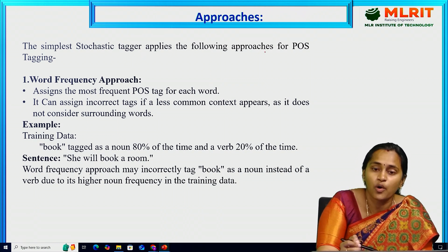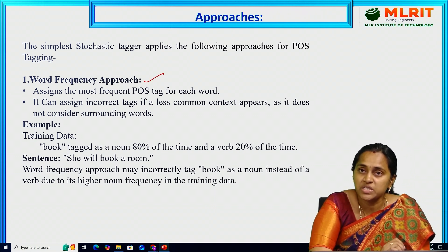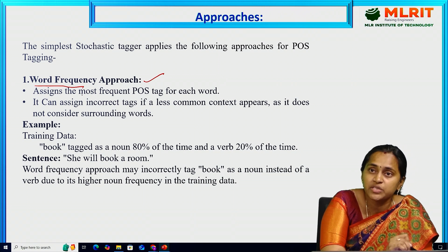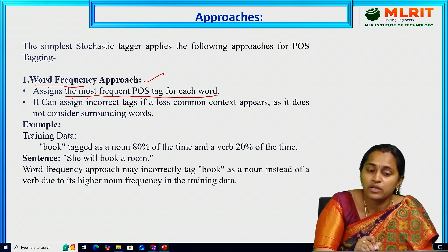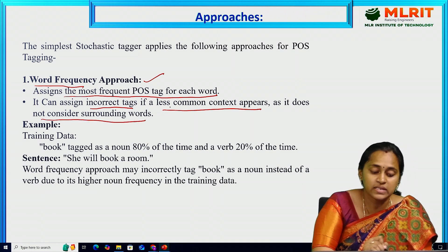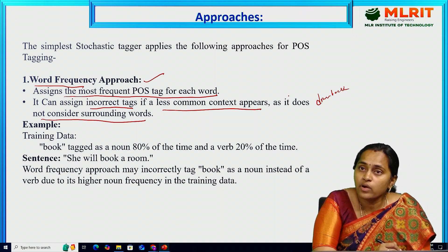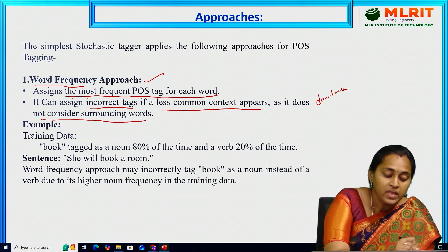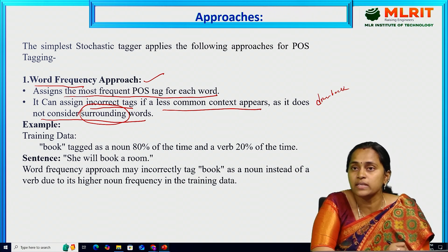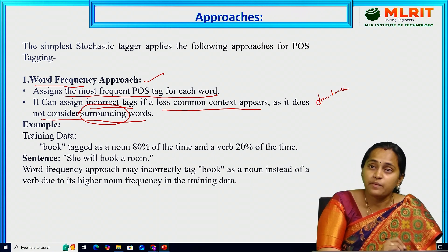There are two approaches. The first one is the word frequency approach. Word frequency means we are calculating the frequency of the word — it assigns the most frequent POS to each word. The drawback is it assigns incorrect tags if a less common context appears, as it does not consider the surrounding words. It automatically assigns an incorrect tag — it will not consider the preceding or following words.